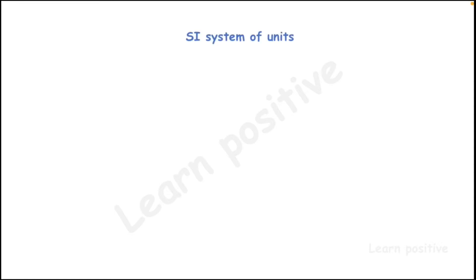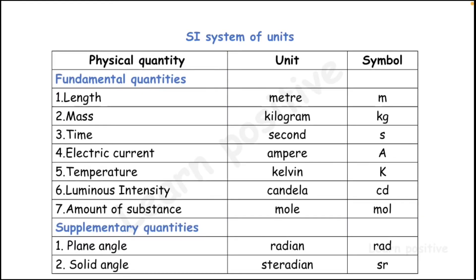In the previous video we saw about SI units — there are seven fundamental units and two supplementary units. Now we are going to discuss about the SI system of units. I am going to divide it into three parts for comparison: physical quantity, units, and symbols. The seven fundamental quantities are length, mass, time, electric current, temperature, luminous intensity, and amount of substance, and two supplementary quantities are plane angle and solid angle.